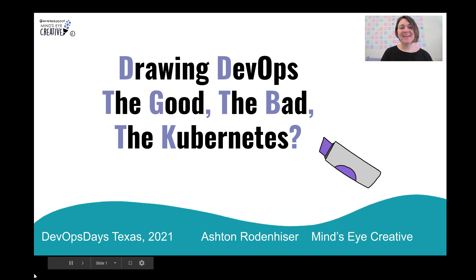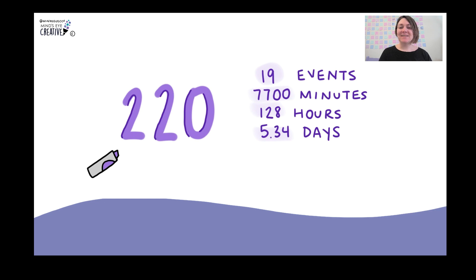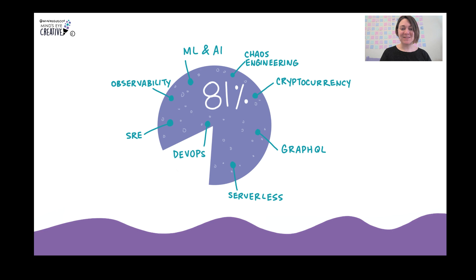Hey everybody, it's Ashton Ronizia here, and huge thanks to the DevOps Days Texas crew for welcoming me to do this talk today on Drawing DevOps: The Good, the Bad, and the Kubernetes. Since 2017, I've drawn 220 graphics over 19 events, which equals 7,700 minutes, 128 hours. 81% of my professional career is now within the tech space, so huge thank you.